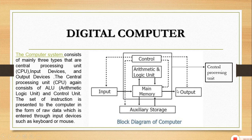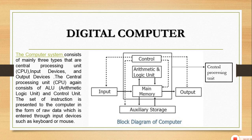The central processing unit is called the brain of the computer. It comprises of three parts: the control unit, arithmetic and logic unit, and the main memory. Any set of instructions given to the computer — input devices are used to give these instructions or raw data to the computer. According to these instructions, the CPU stores and processes this data, and ultimately gives out a result shown through the output devices.